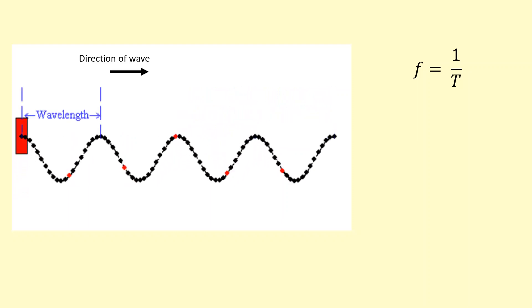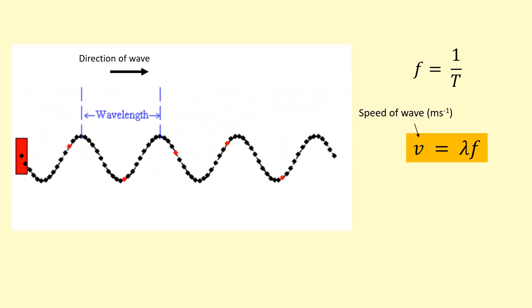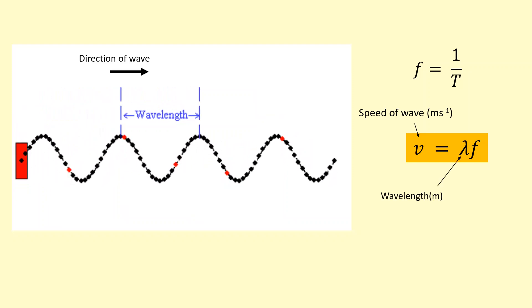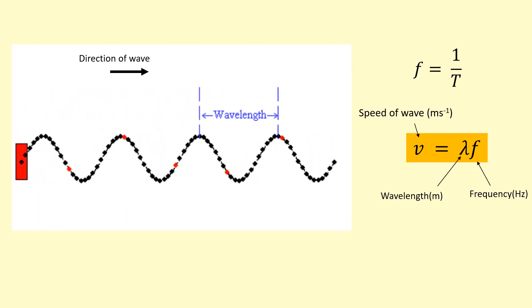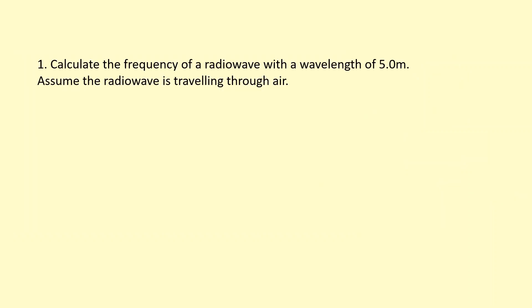formula is the wave speed equation. Here v stands for the speed of the wave in meters per second, lambda is the wavelength in meters, and frequency in Hertz. In this question we're asked to calculate the frequency of a